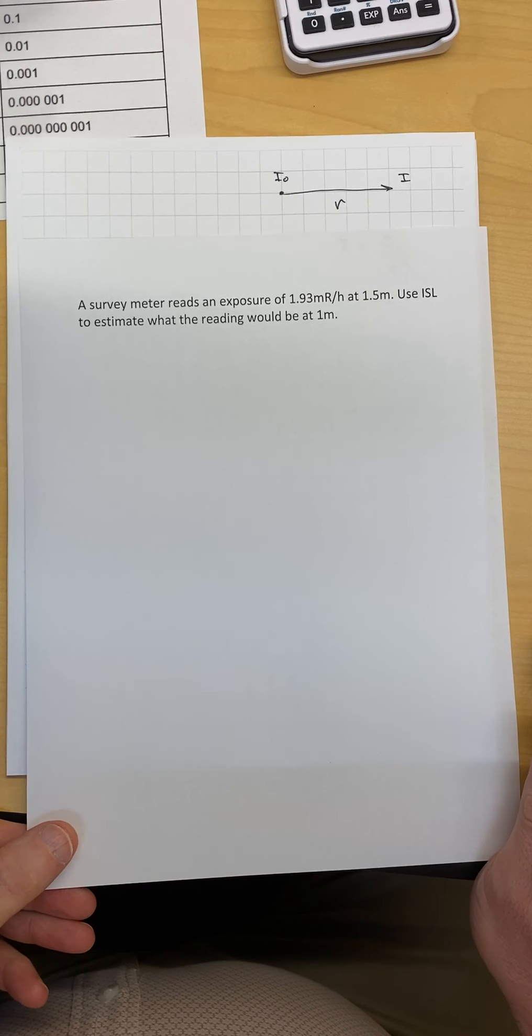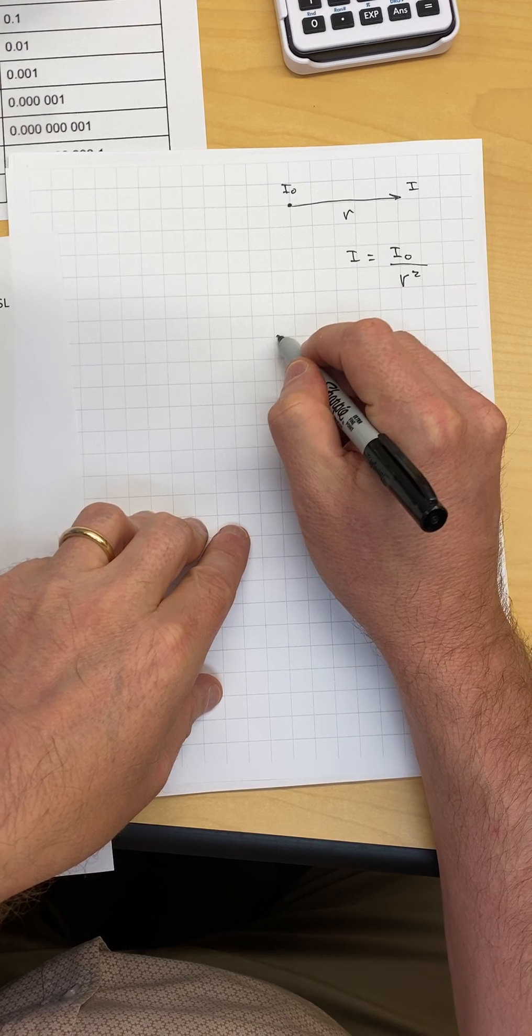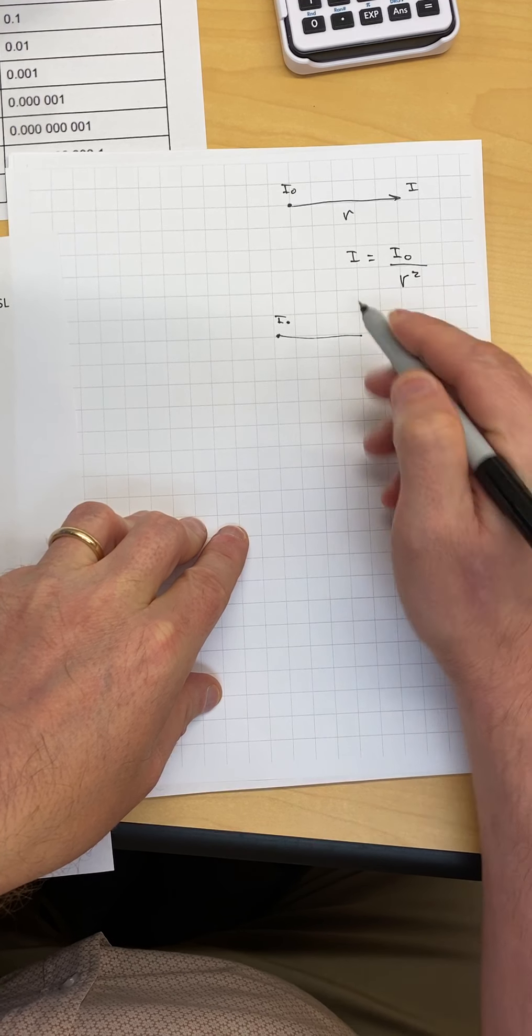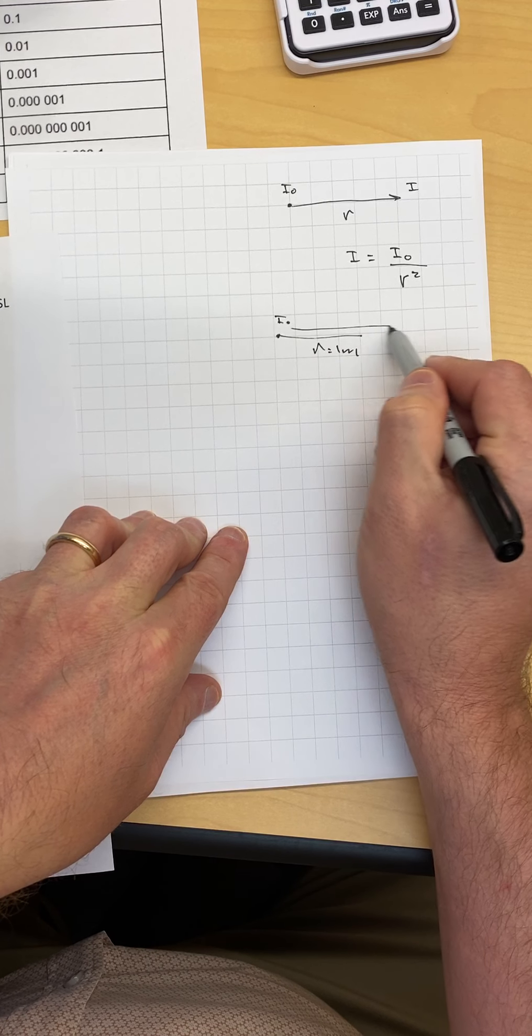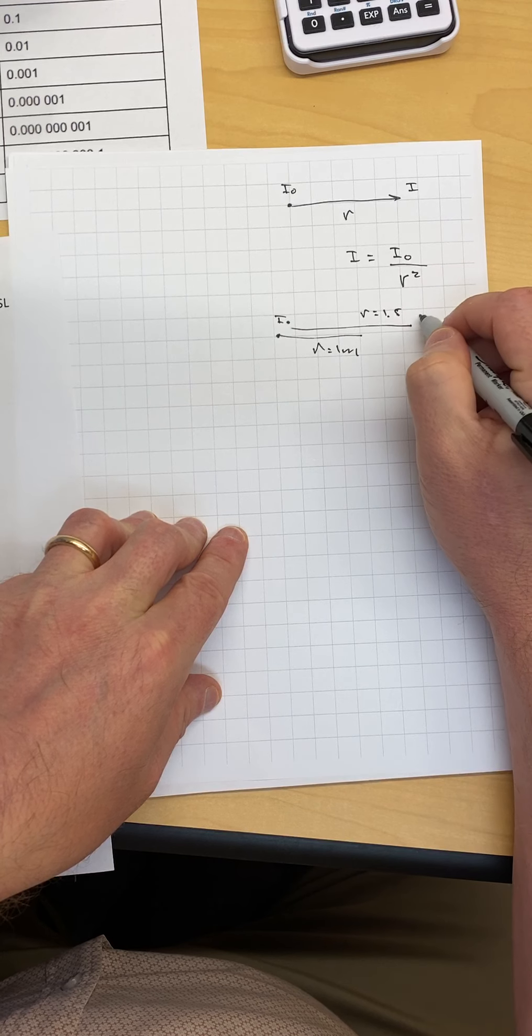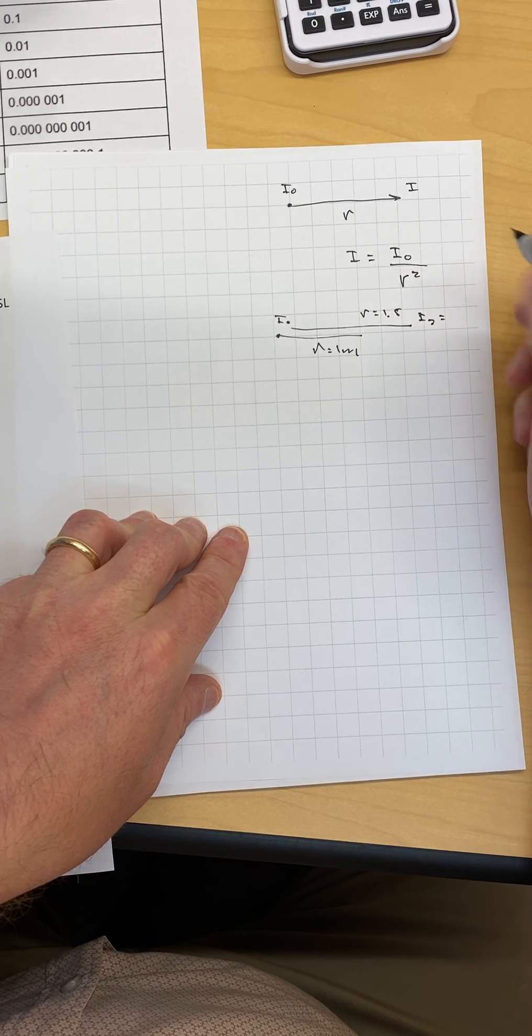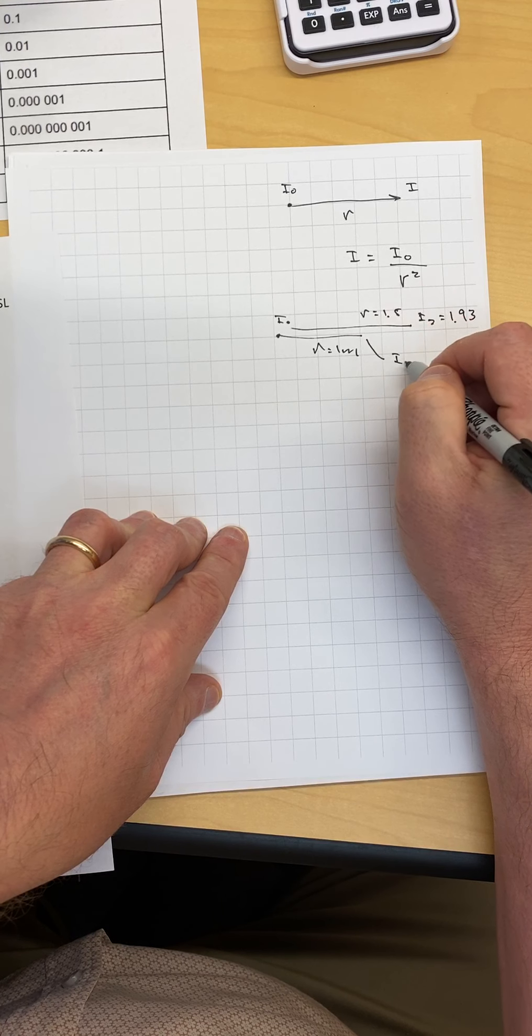So we're going to go from 1.5 to 1. I'll just diagram that out quickly. A certain intensity. Here's R is equal to 1 meter. And then a certain distance away, you have R is equal to 1.5. And we know the intensity here is equal to 1.93. And I want to know what the intensity is right here.